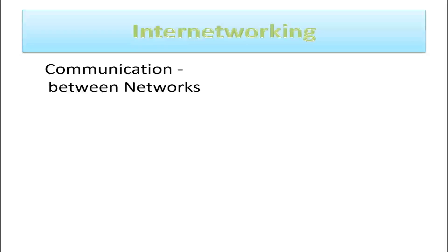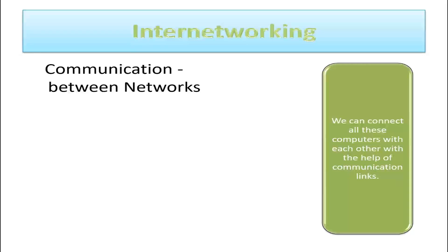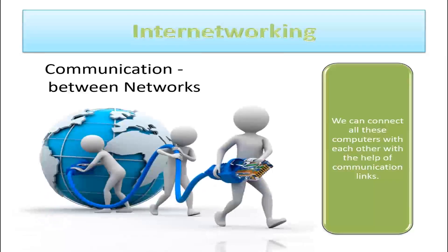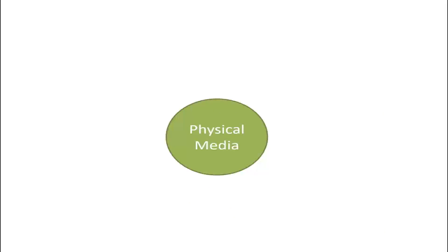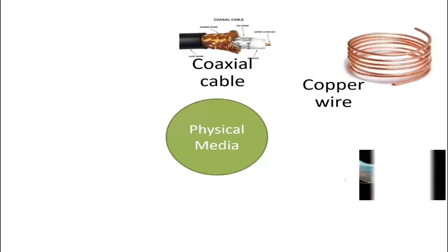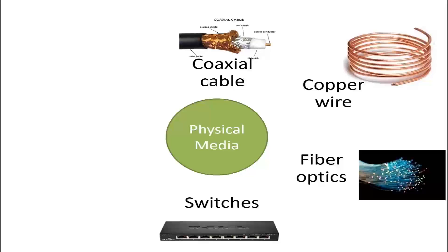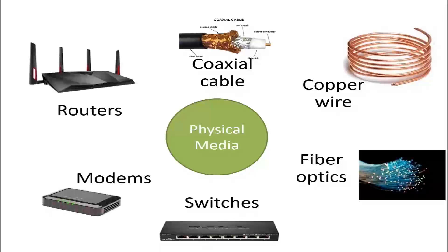Now, how do we connect these devices? Well, we can connect all these computers with each other with the help of communication links. This consists of physical media, that is, wires and devices, which include coaxial cable, copper wire, fiber optics, switches, modems, and routers, etc. Different links can transmit data at different data rates, that is, bandwidth, which is measured in bits per second of the link.